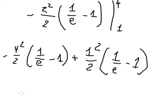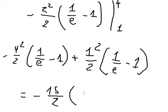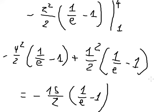Now we need to simplify. We have negative 15 over 2, and we have negative 1 over e minus 1. This is the end. Thank you for watching, I'll see you next time.